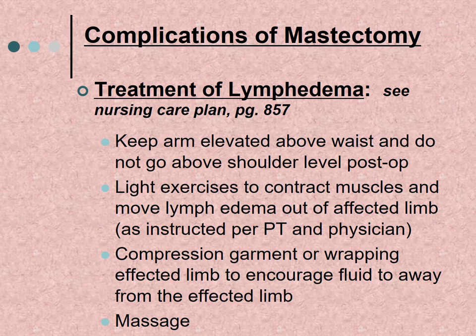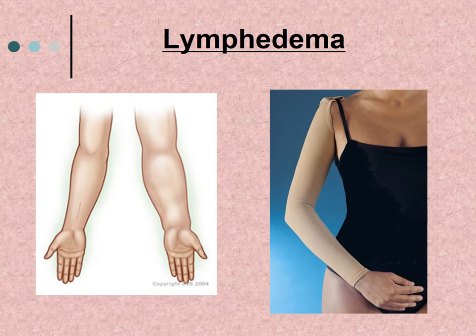To treat lymphedema, we keep the arm elevated above the waist but not above the shoulder level post-op. Light exercises are performed to contract the muscles and move lymphatic fluid out of the affected limb, as instructed by physical therapy and the physician. Compression garments or wrapping the affected limb in an ACE wrap encourages fluid away from the limb, along with gentle massage.